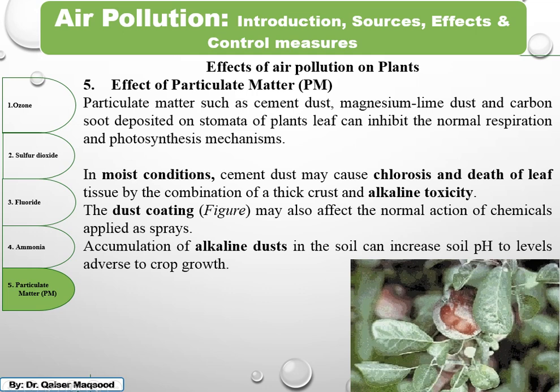Thick dust and alkaline toxicity in dust can also be dangerous. The dust coating is shown in the figure. Accumulation of alkaline dust in the soil can increase the pH to a level adverse to crop growth. That covers all the effects of these air pollutants on plants.